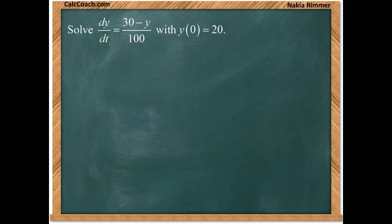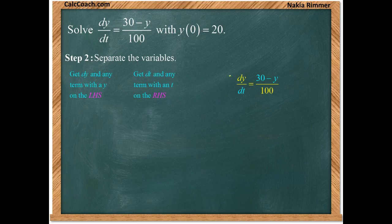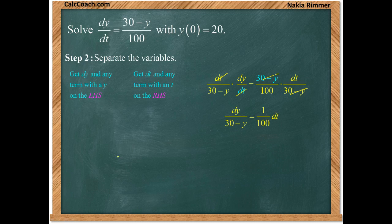What's the first step? Well, I guess it's step two. We need to separate the variables. Go to your equation and put any y and dy on the left-hand side, any kind of t and dt on the right-hand side. So this (30 - y) needs to be moved over to the left-hand side. This dt needs to be moved over to the right-hand side. So we multiply and divide. We multiply by dt, we divide by (30 - y). That'll put things in their right place. We'll have dy over (30 - y) equal to 1 over 100 dt. And we separate it.